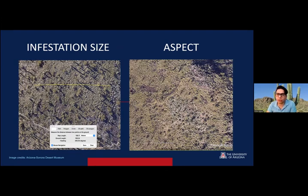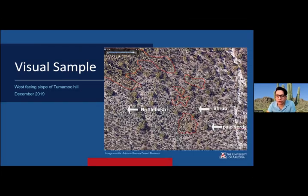For infestation size, this goes over the growth span of the invasive grass — buffelgrass — measuring from one side to the opposite end of the growth. For aspect, it's at which orientation of the mountain — north, south, east, or west — the buffelgrass most predominantly grows. This was predetermined through the Arizona Desert Museum that only the north-facing slopes of a mountain do not grow predominant buffelgrass, so we excluded that from our study area. Here you're seeing a visual sample of what a mapper could produce in Google Earth Pro, with red outlines marking boundaries for buffelgrass growth within any given area, alongside other relative shrubs that could cause confusion, but the key helps mappers understand what to look for.